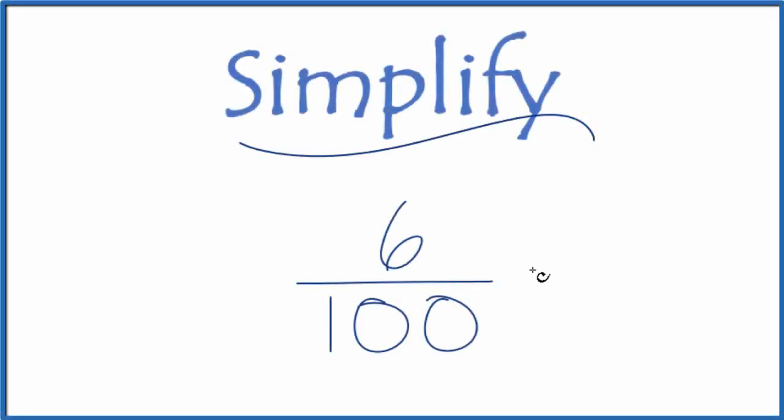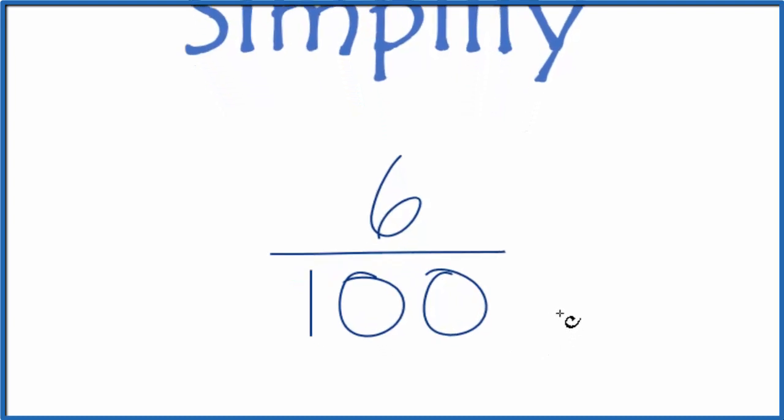Okay, let's simplify the fraction 6 one-hundredths, or 6 over 100. When we're simplifying a fraction, we're trying to find the lowest terms that we can put the fraction in and still have it equal the original fraction. So we're looking for whole numbers here.